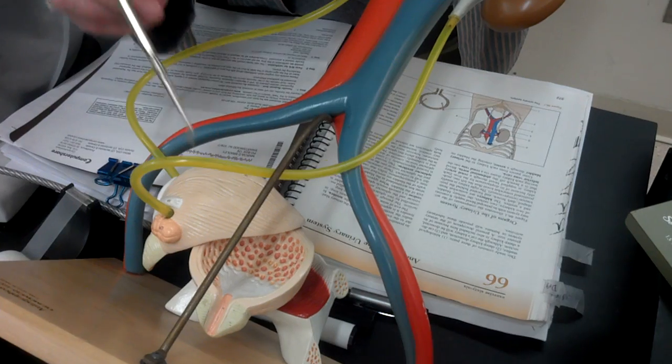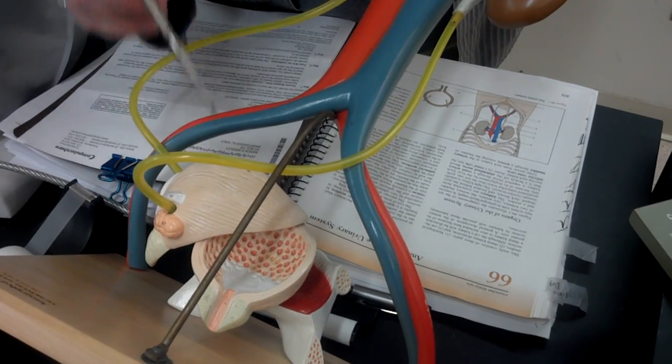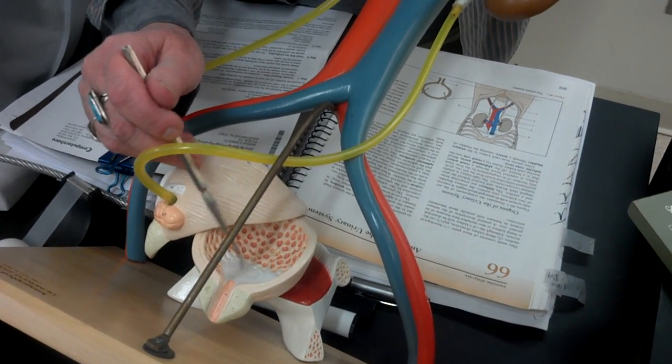So all of these structures, the ureters and the bladder, can stretch, except in one place. And that's this white area right here, which is called the trigon.